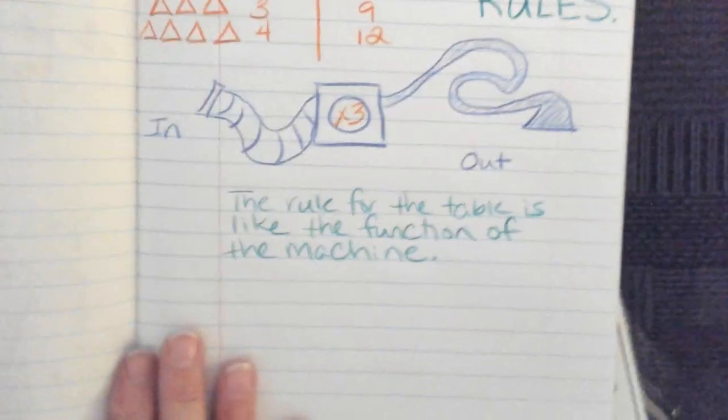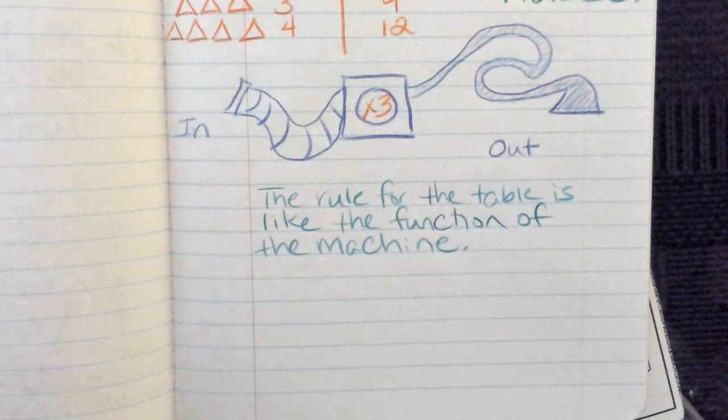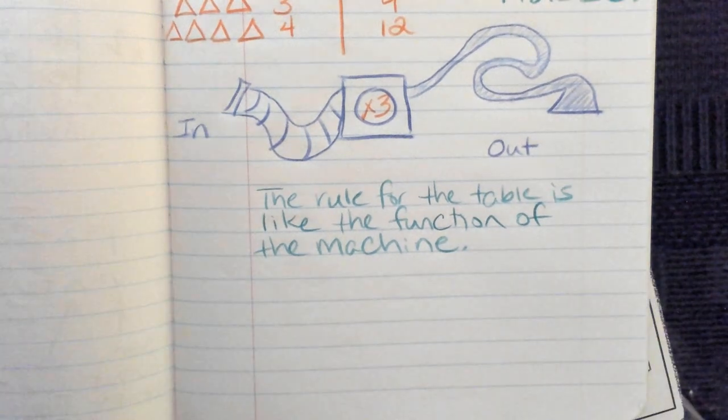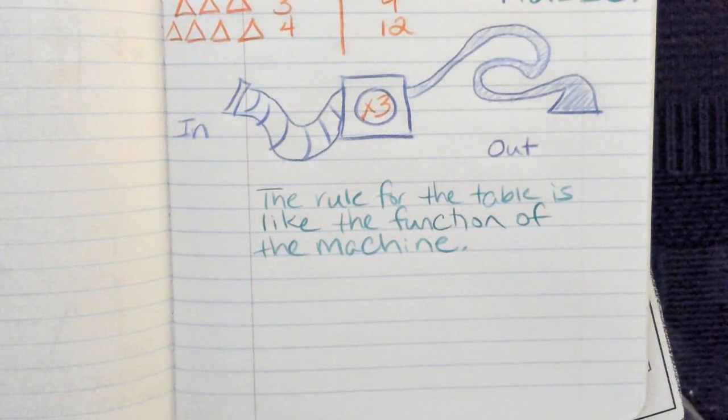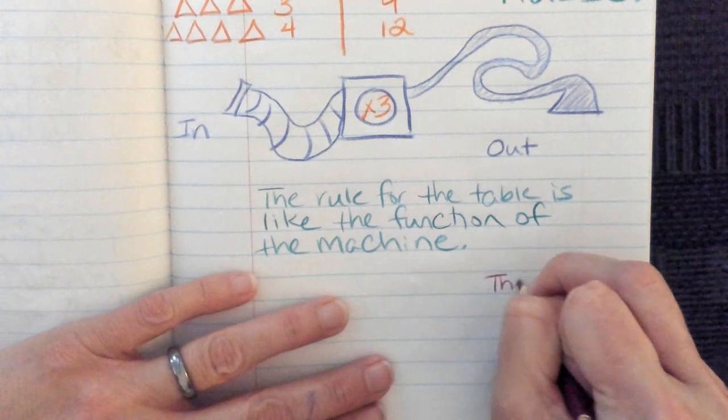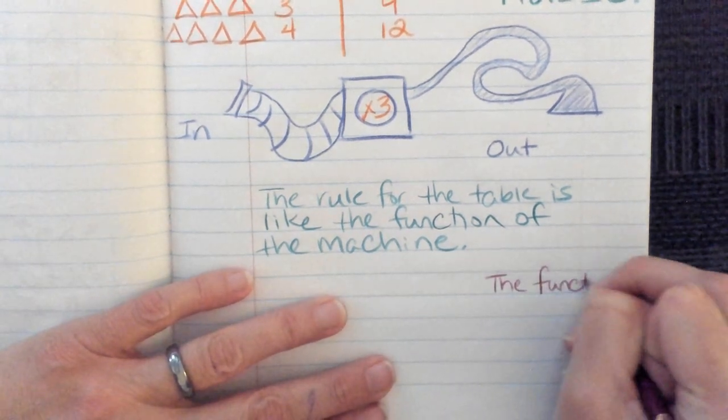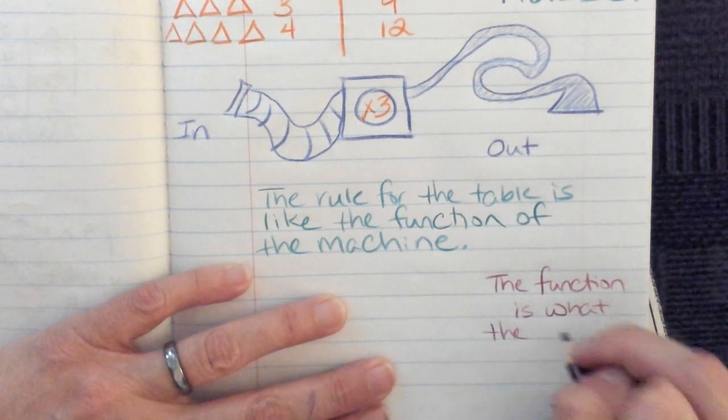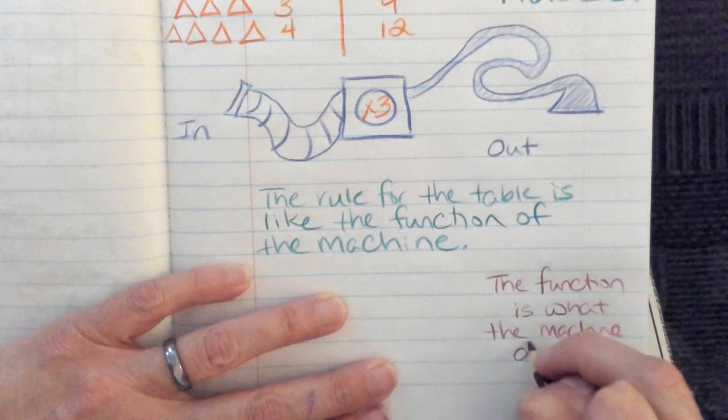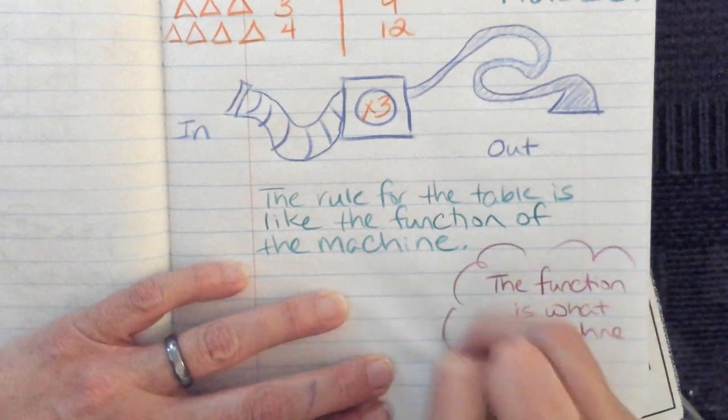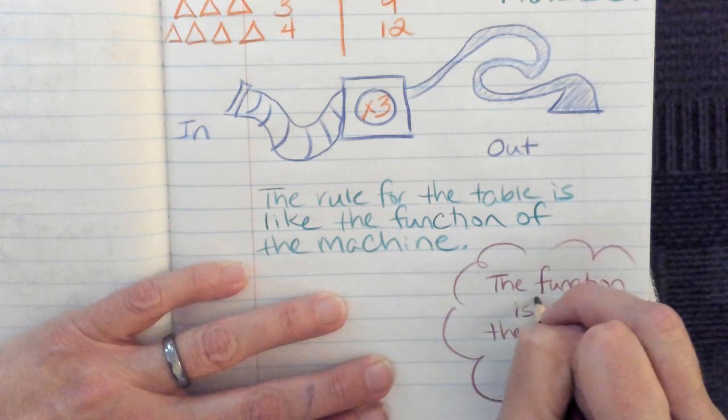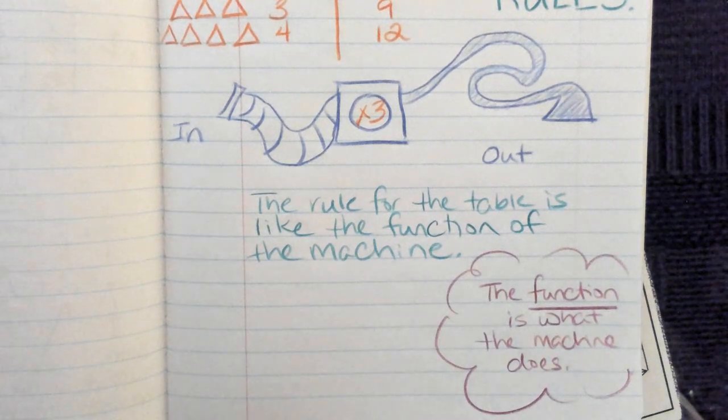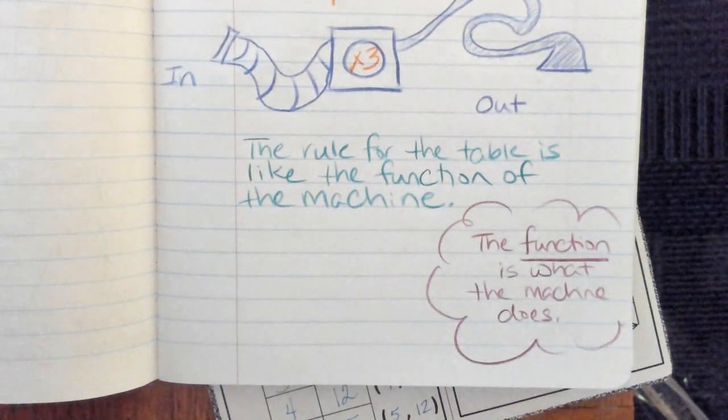So the rule for the table is like the function of the machine, and the function is what the machine does. So I'm actually going to make myself a little note of that down here. So the function is what the machine does. And that's just kind of a little note. Because they might ask, like, that's just a word that you want to start knowing. And so tables...